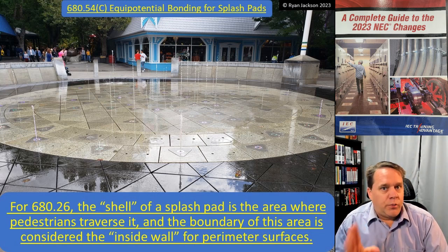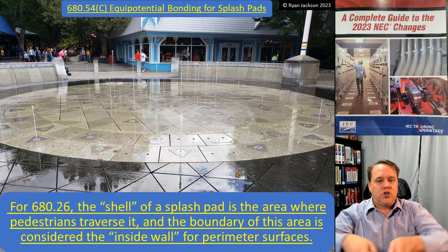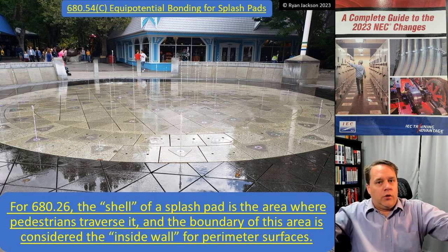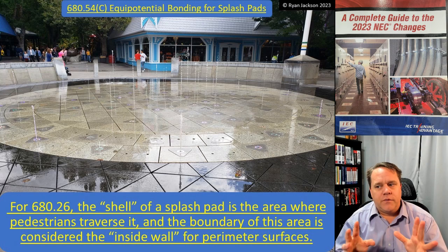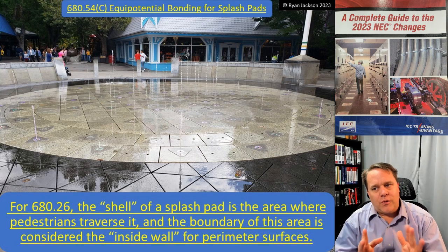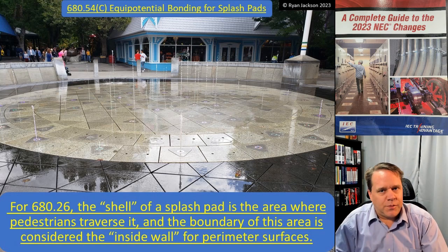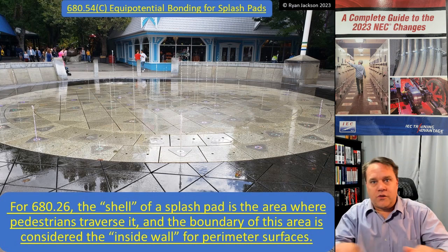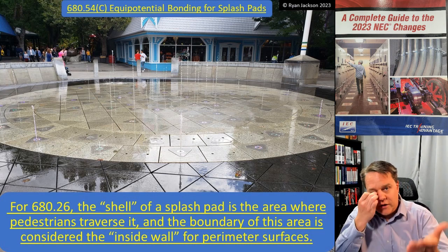We already talked about perimeter surfaces in 680.26 for swimming pools — you bond the pool shell itself and then go out three feet and bond the perimeter surface. But if you don't have a pool and all you have is a flat surface like a splash pad, what's the shell and what's the perimeter? Where does it start and where does it end?